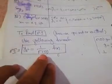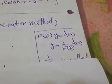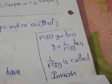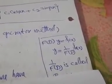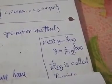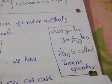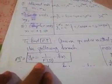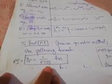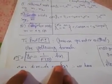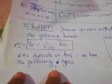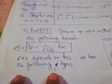For the particular integral, we write f(D)·y equals f(x), so y_p equals 1/f(D) times f(x). This 1/f(D) is called the inverse operator method. The right-hand side depends on f(x), and we have the following types: exponential case, sine/cosine case, polynomial case, and product case.